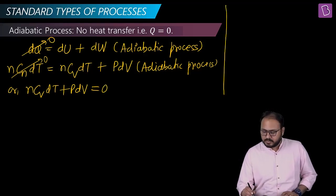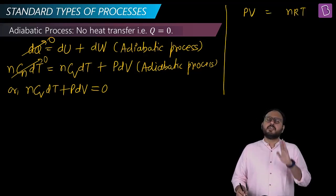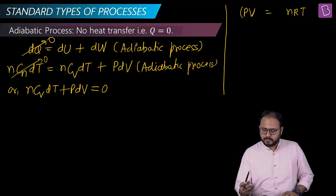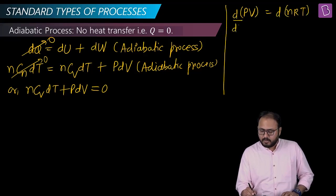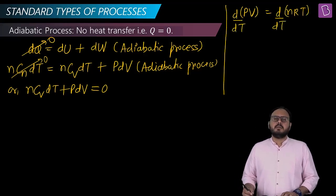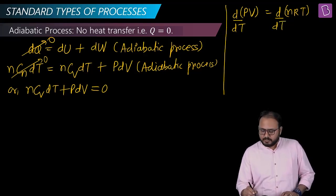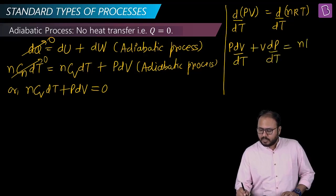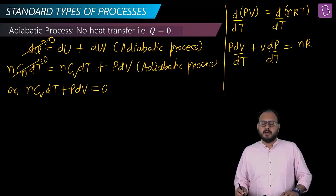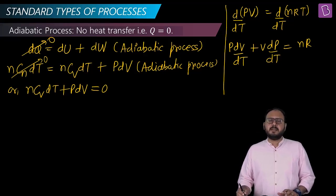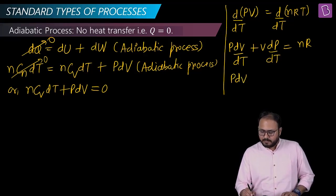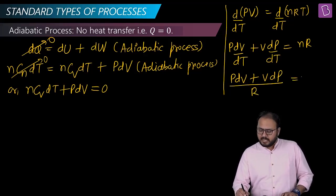Now PV = nRT — differentiate it. Using the product rule, P·dV/dT + V·dP/dT = nR, which gives us P·dV + V·dP = nR·dT. Rearranging: n·dT = (P·dV + V·dP) / R.